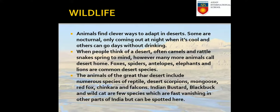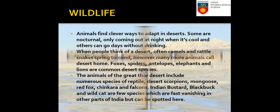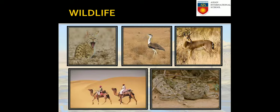Wildlife: animals find clever ways to adapt in the desert. Some are nocturnal, coming out only at night when it's cool, and others can go days without drinking. Common desert animals include camels, rattlesnakes, foxes, spiders, and antelopes. The animals of the Great Thar Desert include numerous species of reptiles, desert scorpions, mongoose, red fox, chinkara, and falcons. The Indian bustard, blackbuck, and wild cat are species vanishing in other parts of India but can still be spotted here. The camel is the most iconic animal of the desert — the ship of the desert.